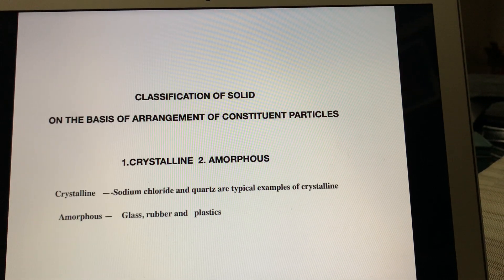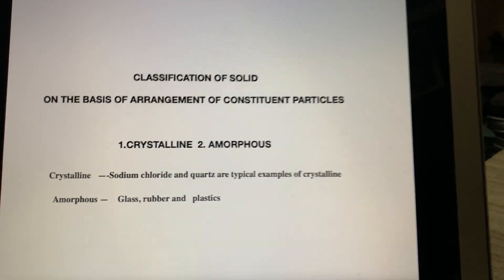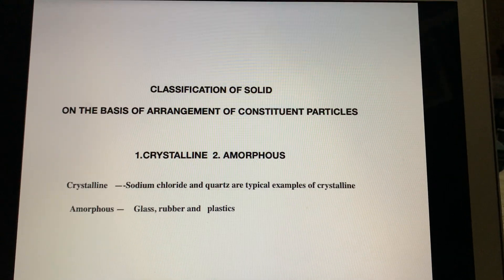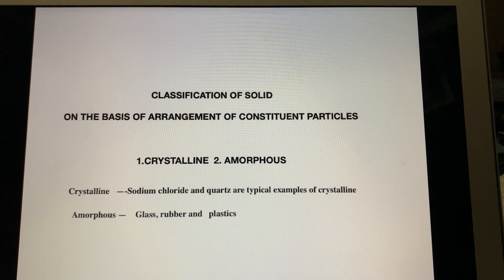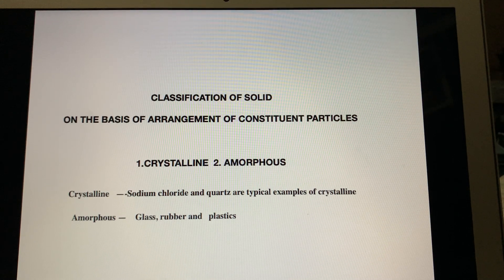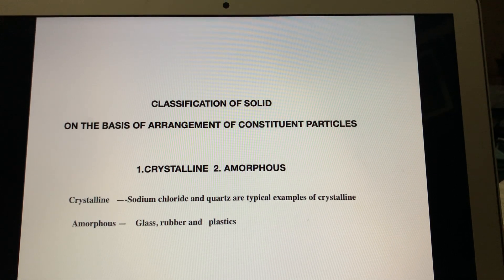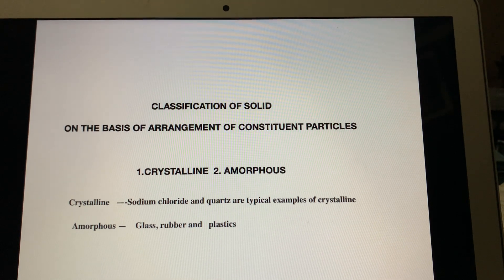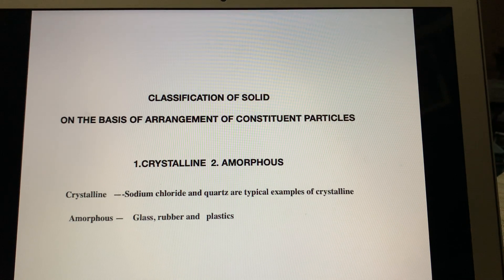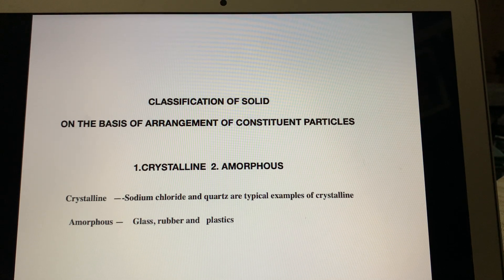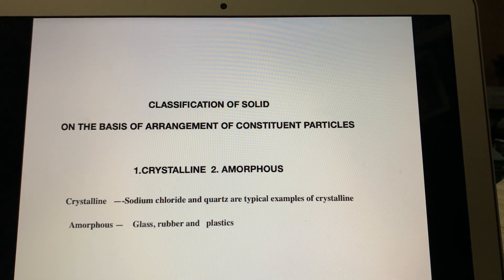Next is classification of solids on the basis of arrangement of constituent particles. How these constituent particles are arranged — on that basis they are classified as crystalline and amorphous. For crystalline, an example is sodium chloride. The solid structured forms that you see are crystalline, while the powder-based types with no definite shape are amorphous.